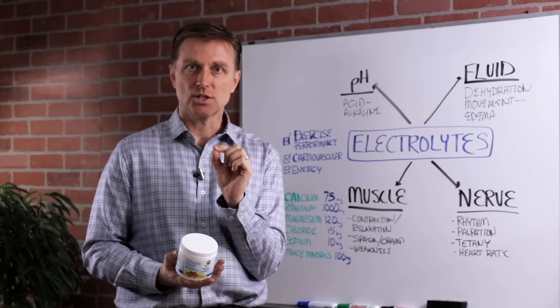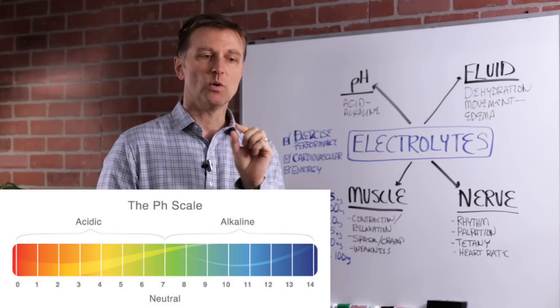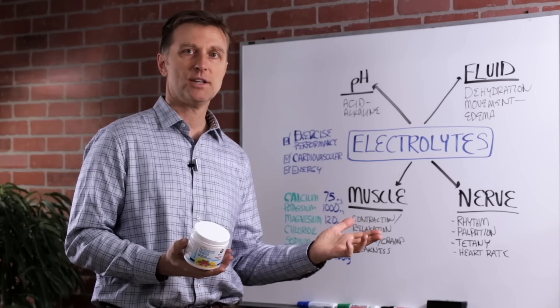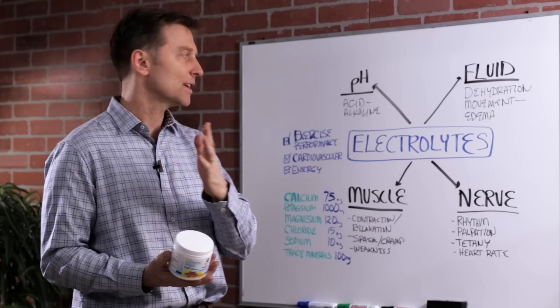Help influence the pH. So your pH is just correct. So the electrolytes and pH work together. If your electrolytes are off, that can throw off your pH. If your pH is off, that can throw out your electrolytes.